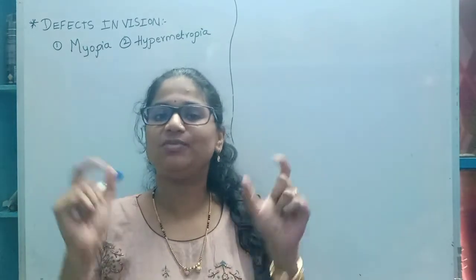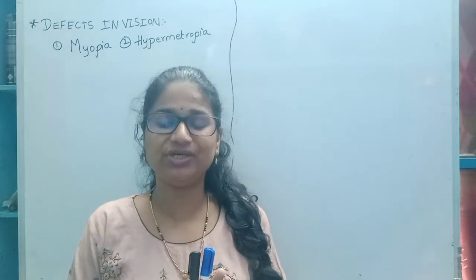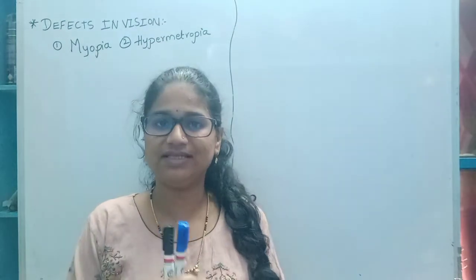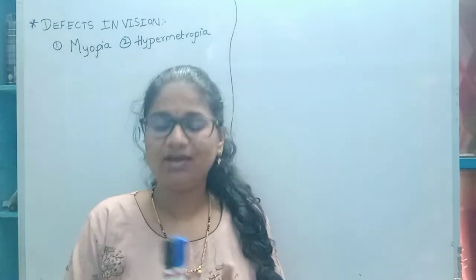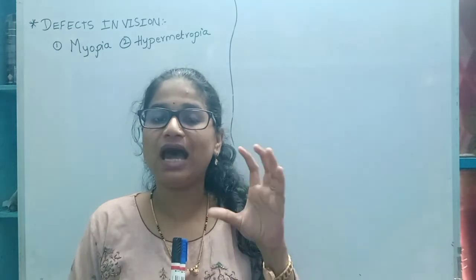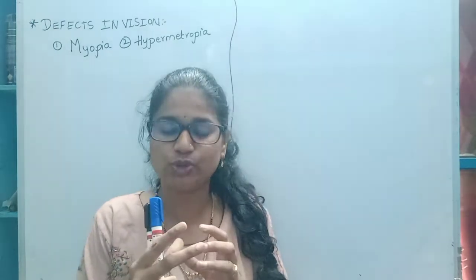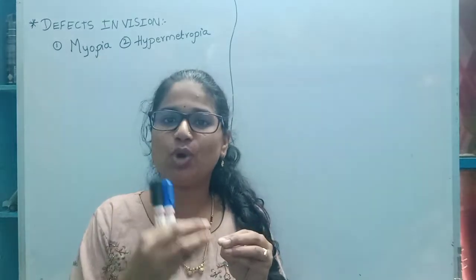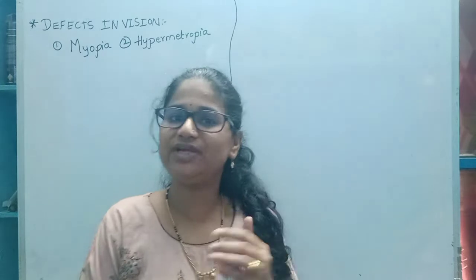Myopia is nothing but short-sightedness, which is caused due to the lens not becoming thin, and due to a defect in the ciliary muscles, as well as due to a large eyeball. If the eyeball is large, the focal length or the image is not formed on the retina — it will form before the retina.